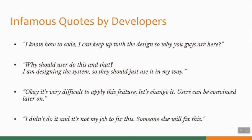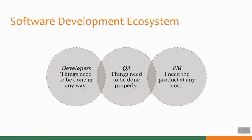There are some examples that might express the feeling of the developers. Just like: 'I know how to code, I can keep up with the design, so why are you guys here?' 'Why should users do this and that — I am designing the system, so they should just use it in my way.' 'It is very difficult to apply this feature, let's change it. Users can be convinced later on.' 'I didn't do it and it is not my job to fix this — someone else will fix this.' So as you can see, the main task of the developers is to develop the system only. Sometimes they may not be concerned about the quality.